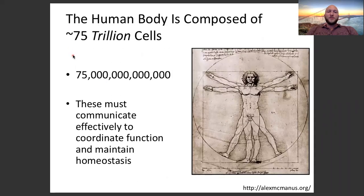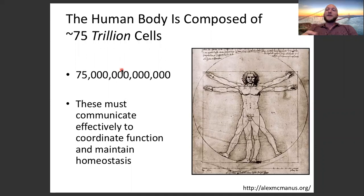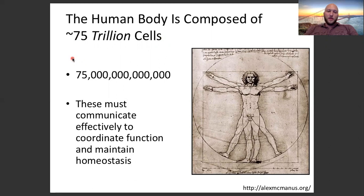How many cells are in your body? How many cells are in your patient's body? A lot. There are a lot of cells in every person's body — 75 trillion. People of different sizes will have different numbers of cells, but that's a lot. You can think of cells as teammates trying to maintain homeostasis, trying to help each other survive in this world.